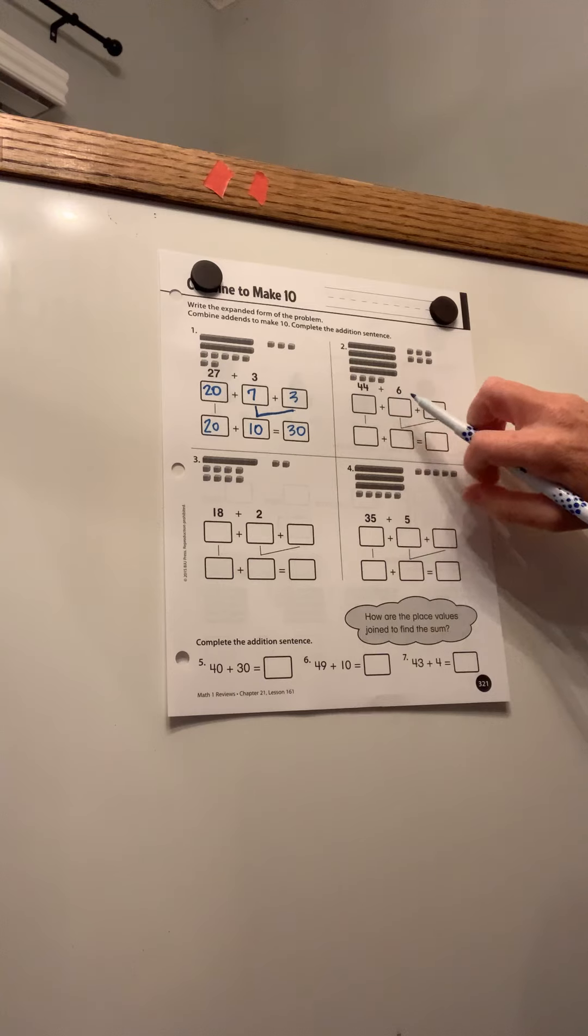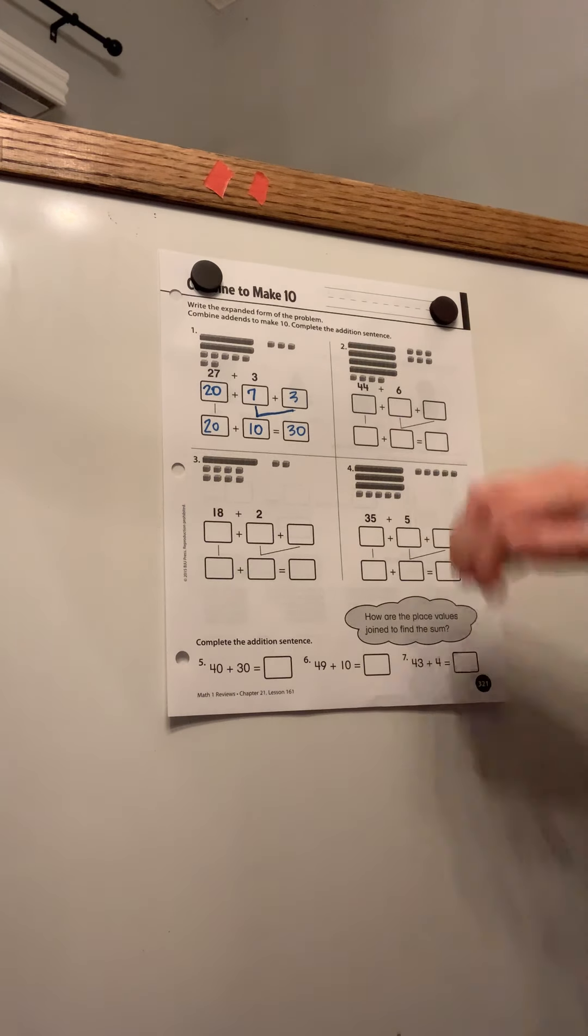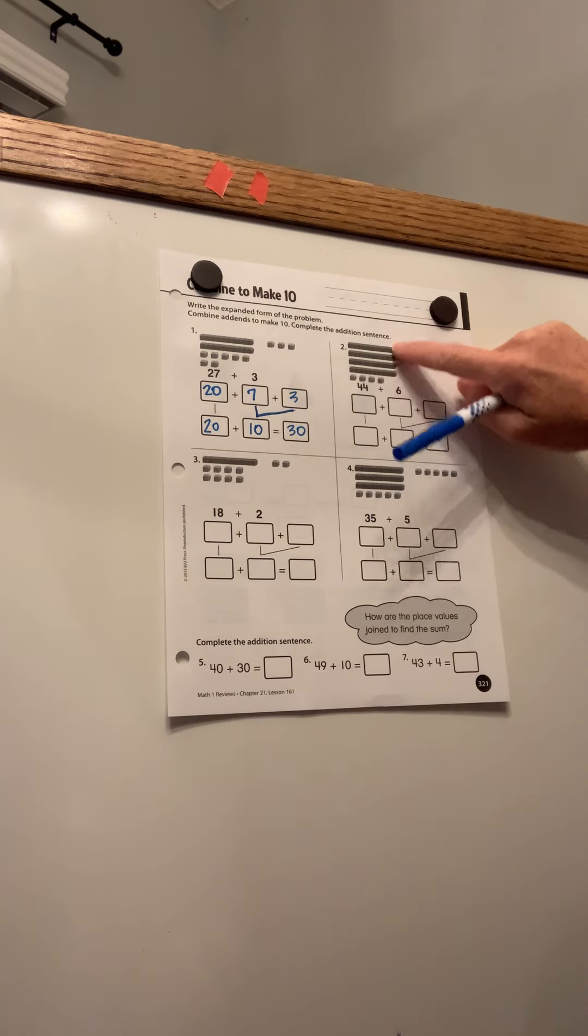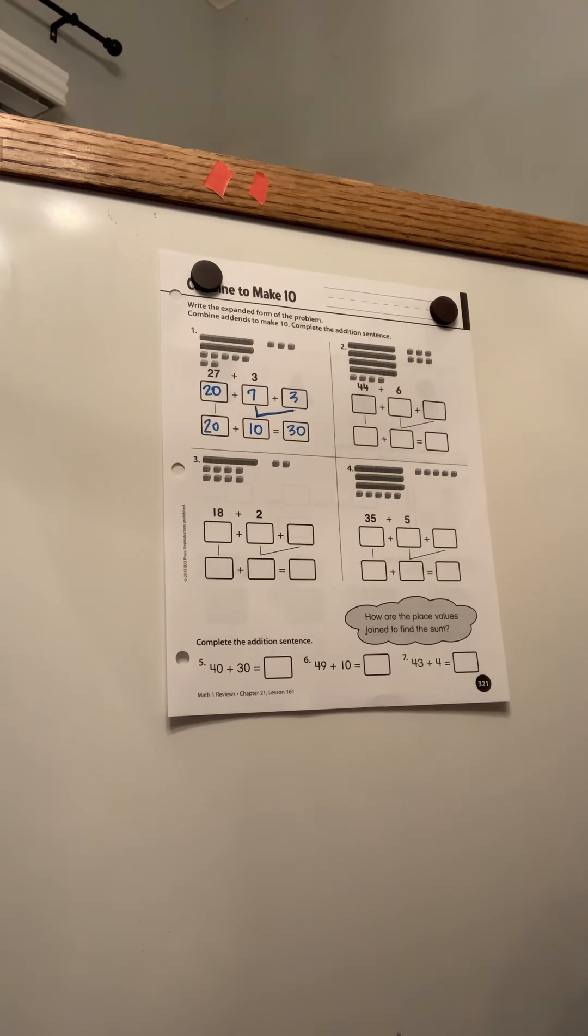Alright. So over here, we've got 44 plus six. Okay. So if you look at our picture, we've got four rows of 10. So 10, 20, 30, 40, there's our 40. And there's the four, 44. And then we have the six that we're adding.